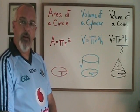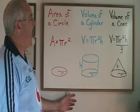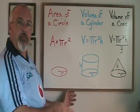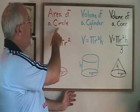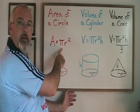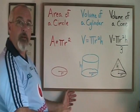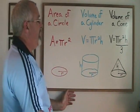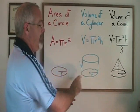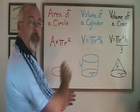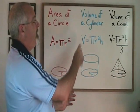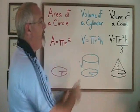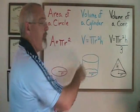As a review, remember that the area of a circle formula is pi r squared. That will give us the area of a circle, which is the bottom of a cylinder. If we find the area of the bottom of a cylinder and multiply it by the height of the cylinder, we get the volume of that cylinder. This is why we don't have to memorize this formula — it is simply pi r squared times the height of the cylinder.